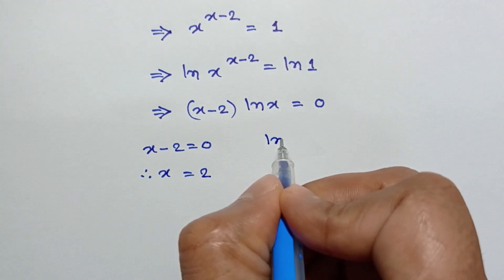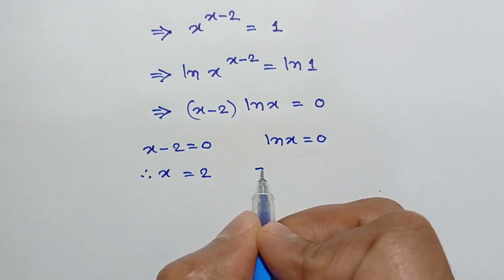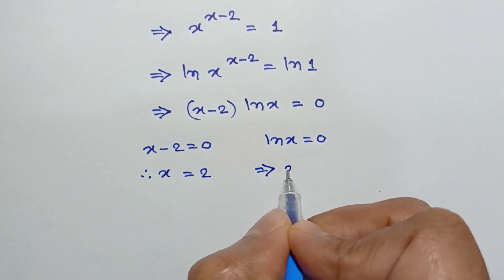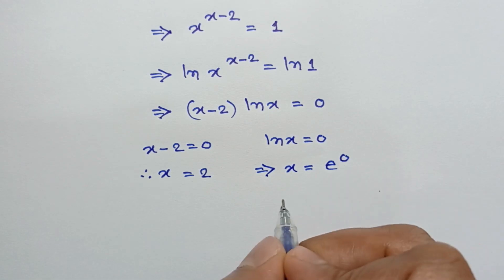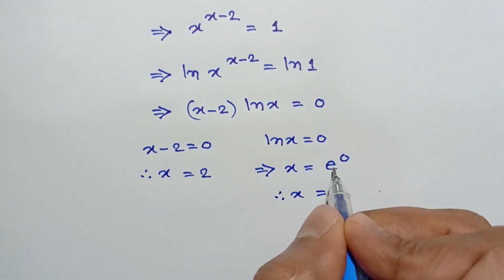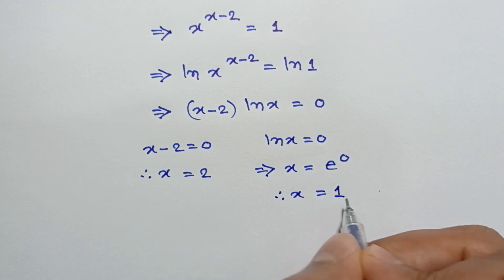When ln x equals 0, we get x equals e to the power 0, which equals 1.